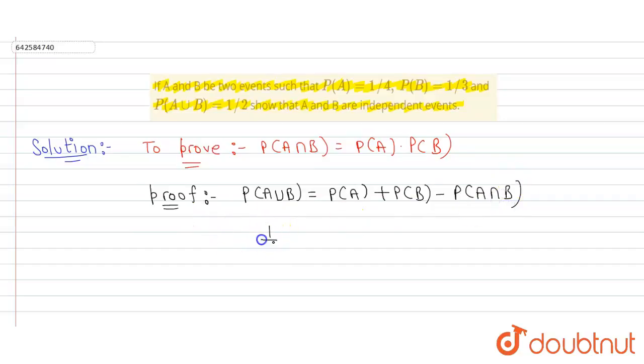P(A∪B) is given, that is 1/2, P(A) is 1/4 and P(B) is 1/3 minus P(A∩B).